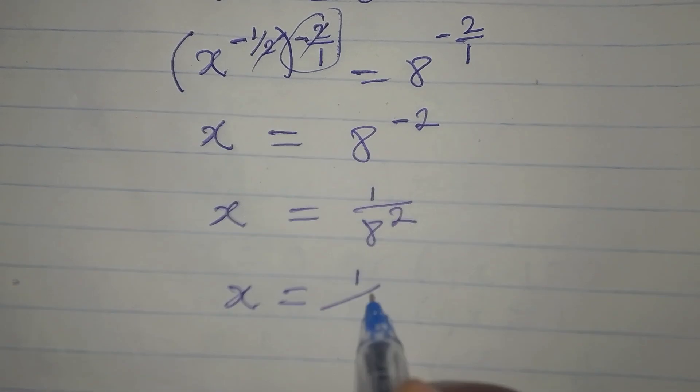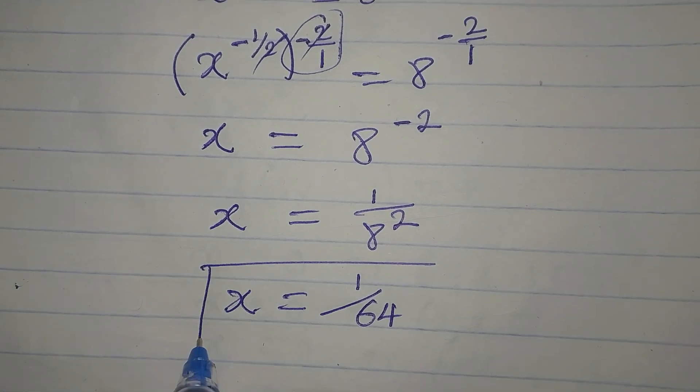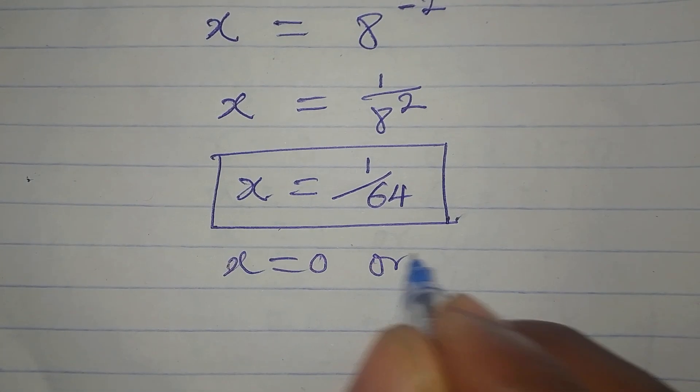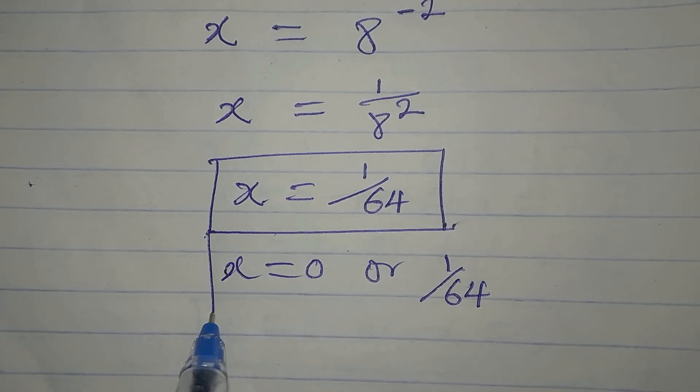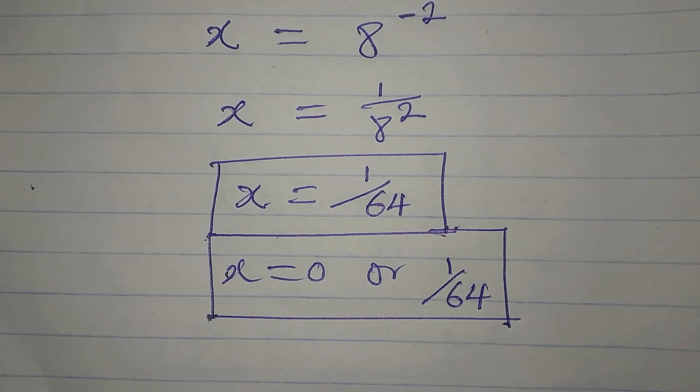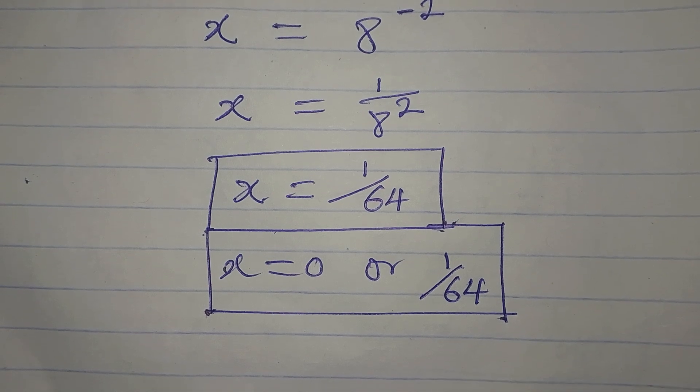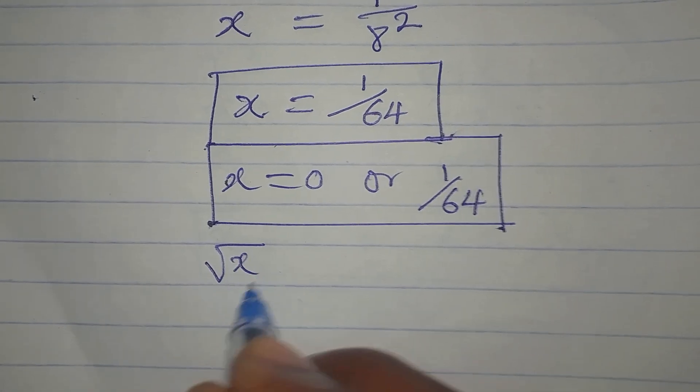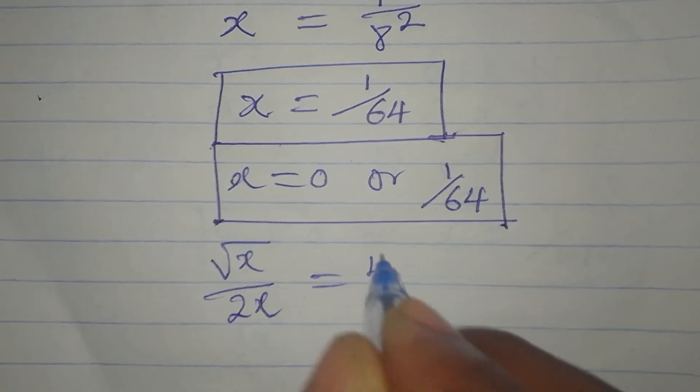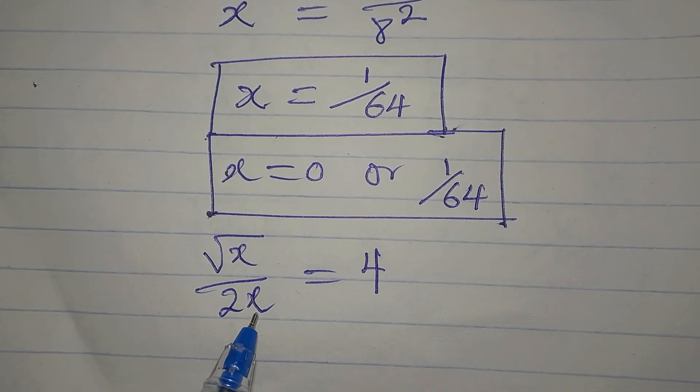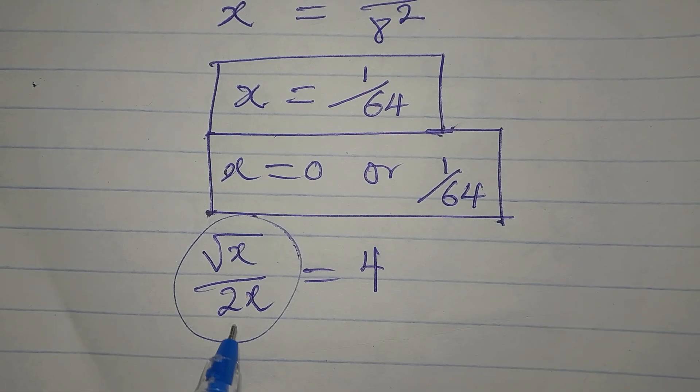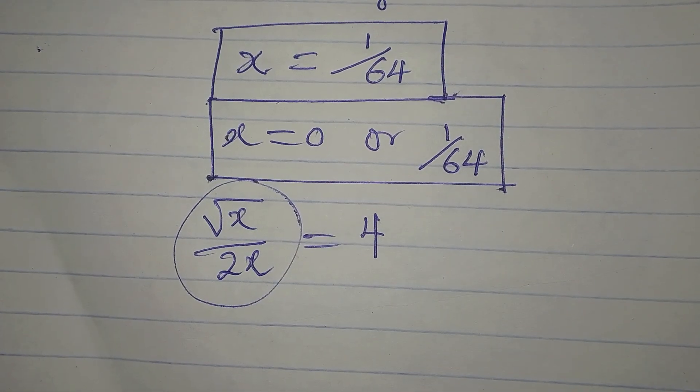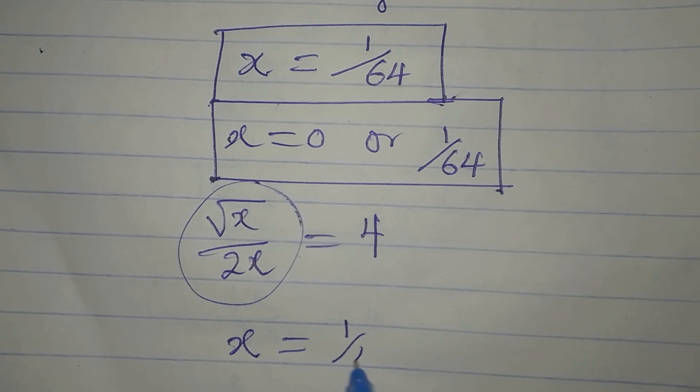So the second method now is giving us one solution, and the first method gave us x to be 0 or 1 over 64. So it looks like one of the methods is giving us more accurate solutions. Remember the equation still remains square root of x over 2x equals 4. Now if we put 0 here, it will make this undefined because we cannot divide by 0. This means that the obvious solution now is x equals 1 over 64.